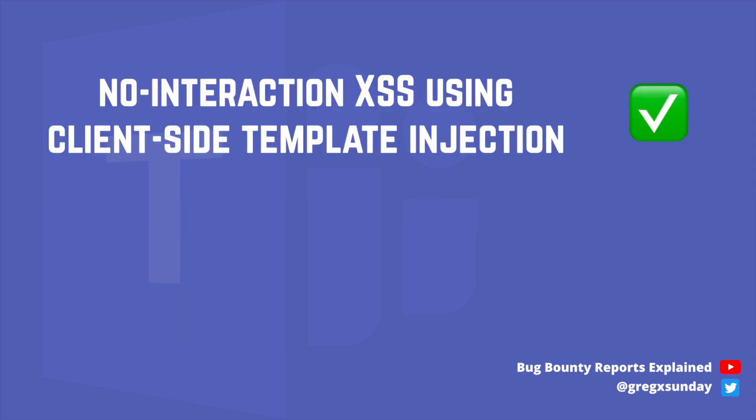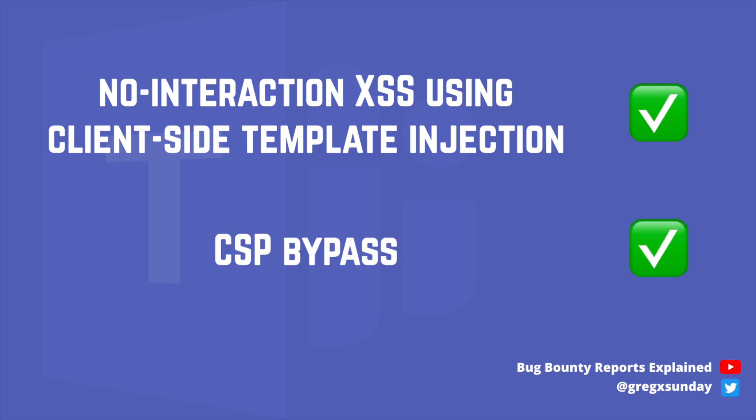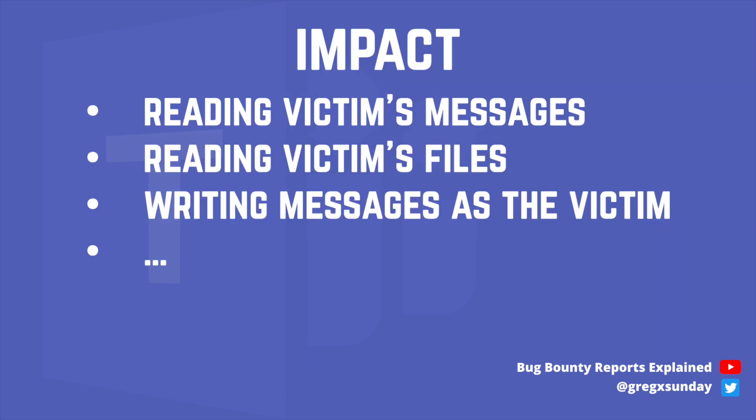So we have a zero-interaction cross-site scripting attack using client-side template injection, which also bypasses content security policy. In the web version of Teams, you can read someone's messages, read their files, and write messages as them. This is already a huge problem.